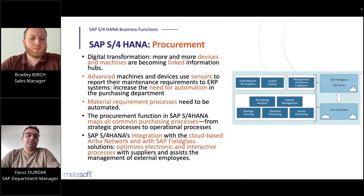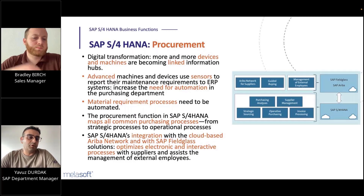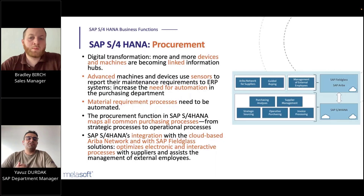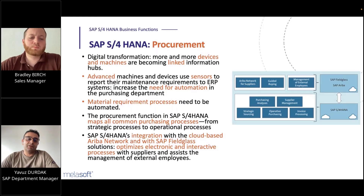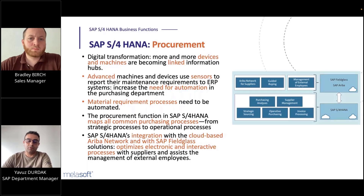Finally, on the procurement side, with digital transformation, more and more devices and machines are becoming intelligent and linked — becoming information hubs connected to each other. Using advanced sensor technologies, machines can submit their maintenance requirements directly to the ERP system, creating a need for automation in purchasing units. Material requirement processes need to be automated. The procurement function in SAP S4 HANA maps all common purchasing processes from strategic to operational levels. SAP HANA's integration with cloud-based Ariba networks and SAP field class solutions optimizes electronic and interactive processes across supply chains.